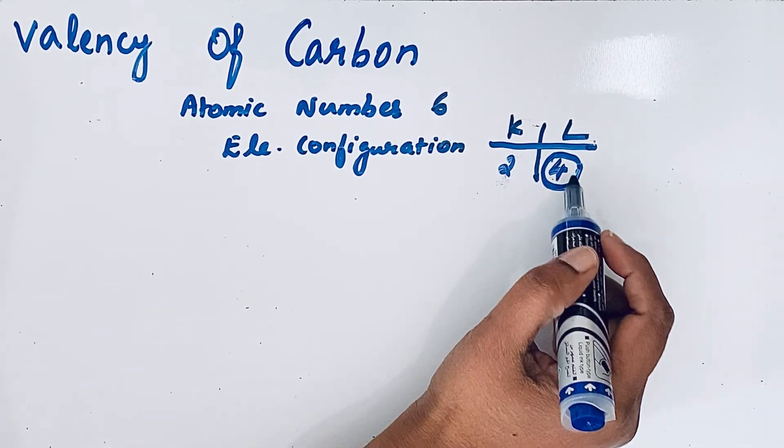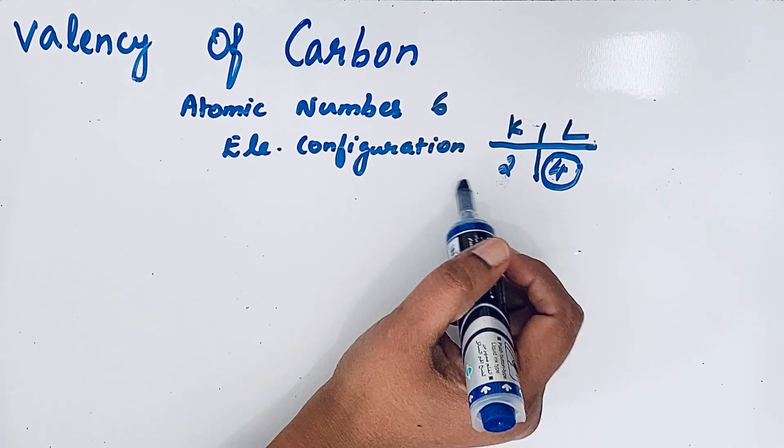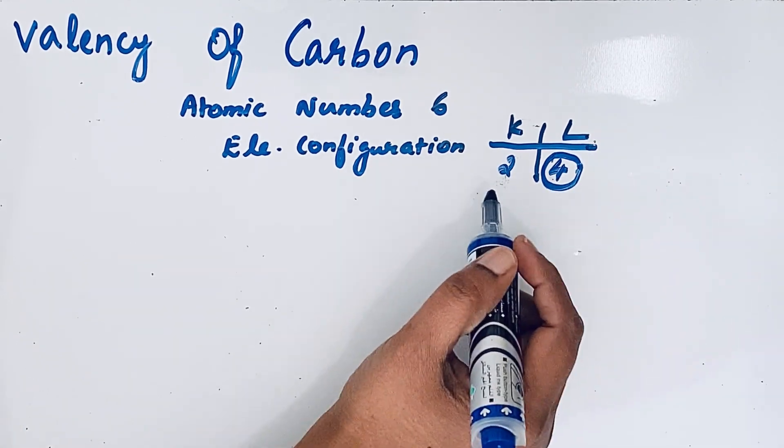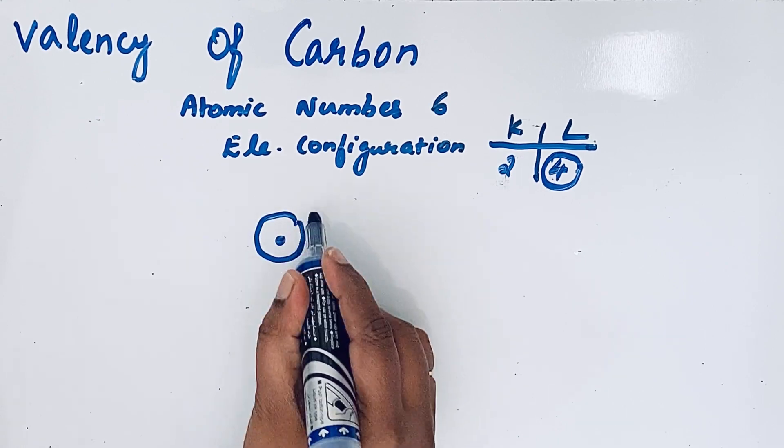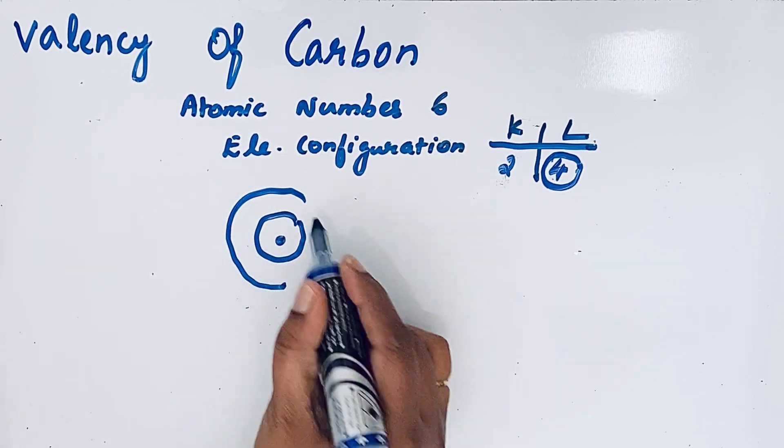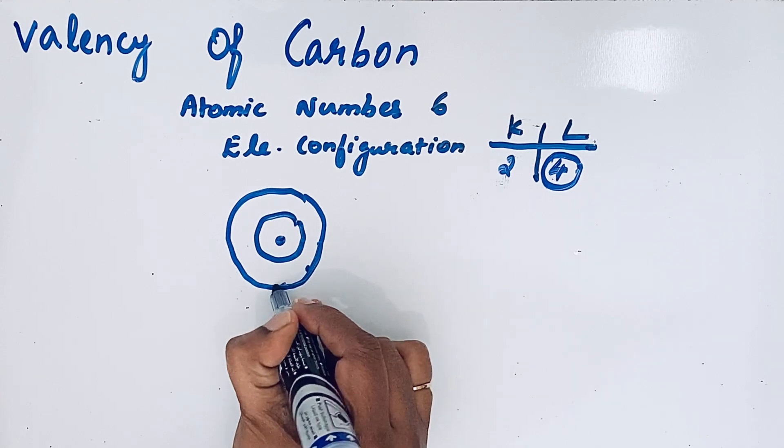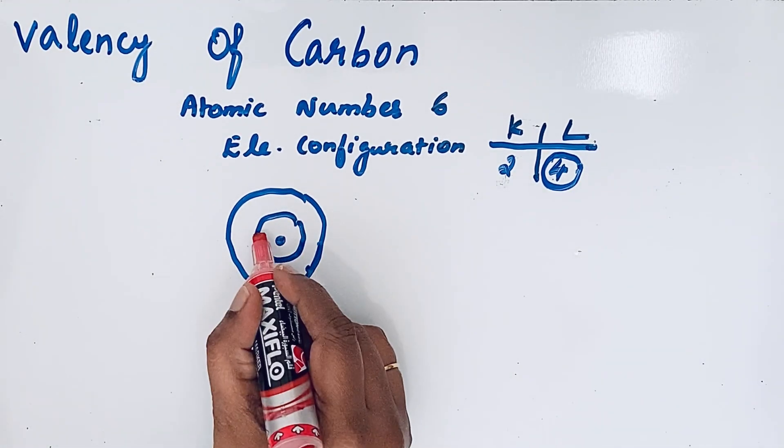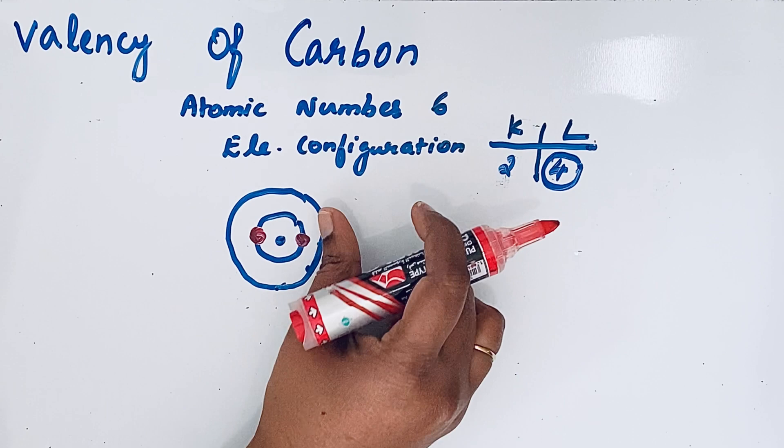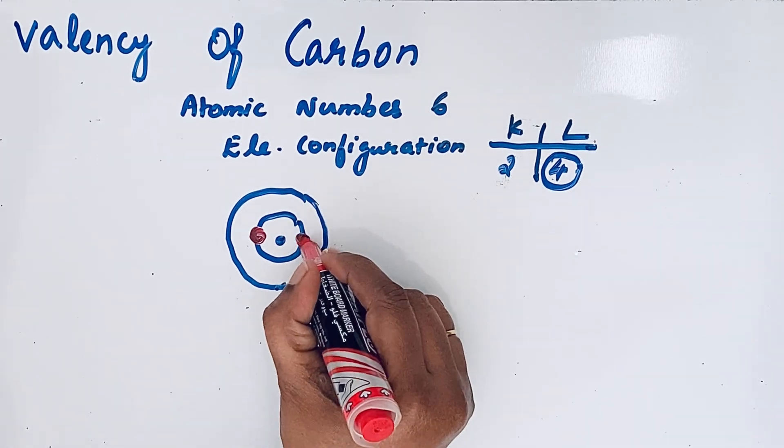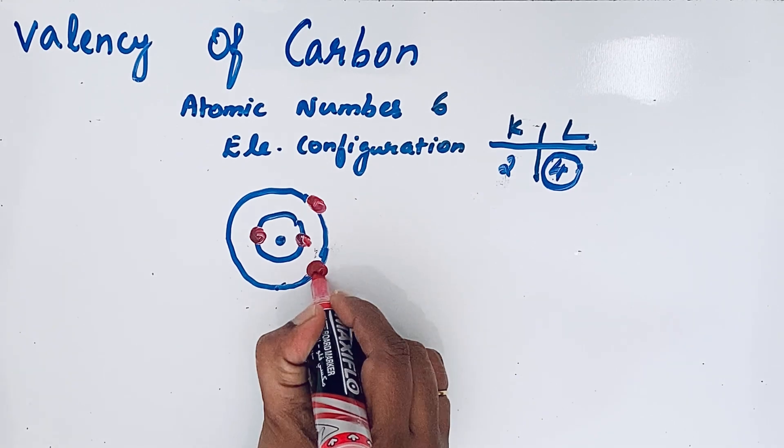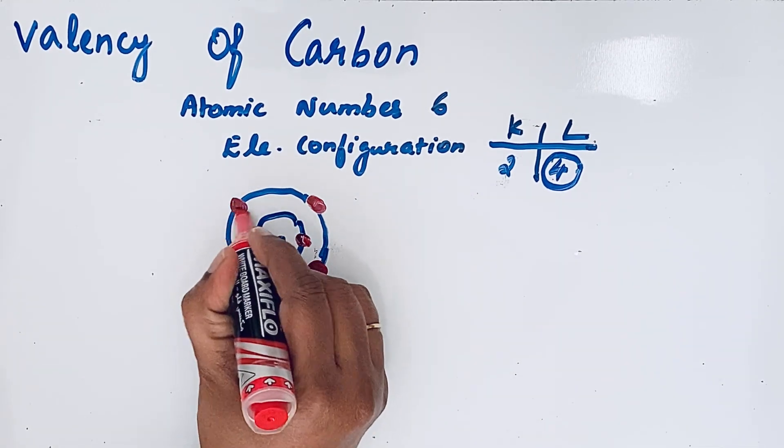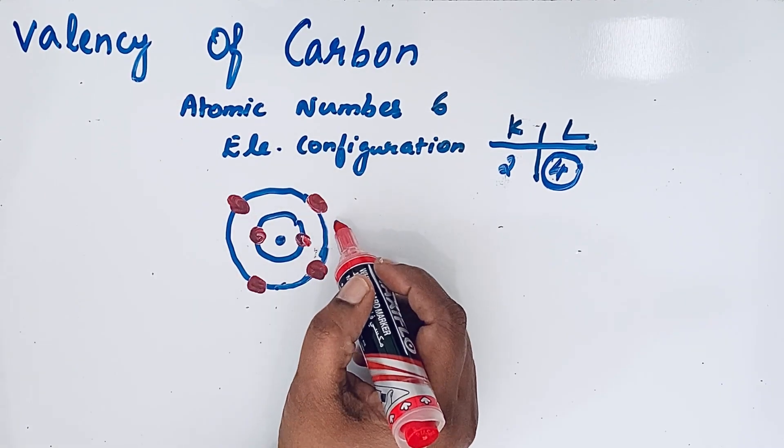From that we can find the valency. First, let us see the schematic structure of carbon: first shell and second shell. In the first shell we have two electrons, and there are four electrons in the second shell—one, two, three, four.